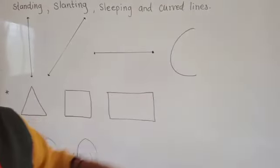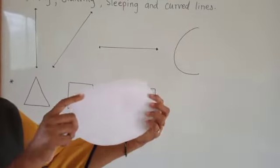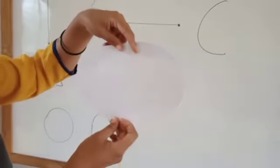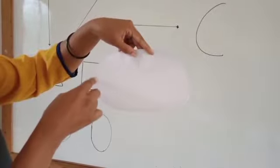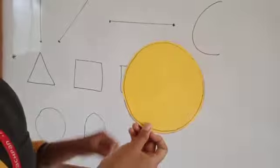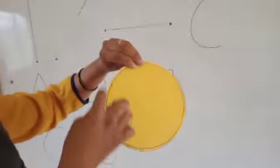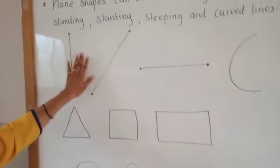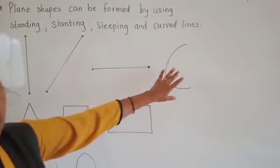Curved lines help us to form a shape. Now, tell me what is this? This is an oval. The oval has no corner and no sides — with the help of a curve line it forms. Another shape is circle. Only curve lines make a circle. So the plane shapes can be formed by using standing, slanting, slipping, and curved lines.